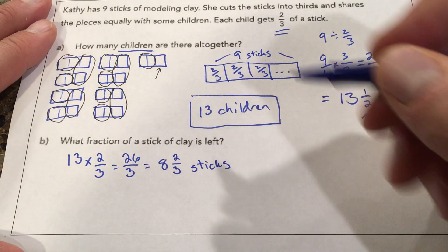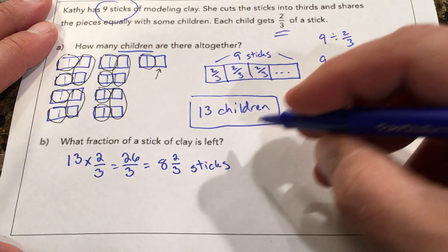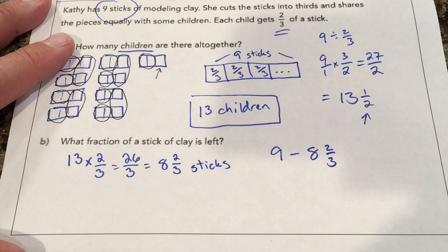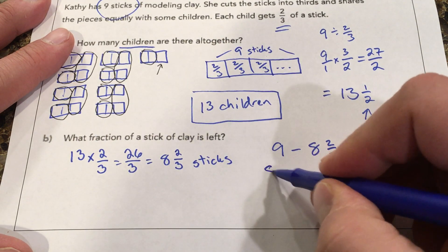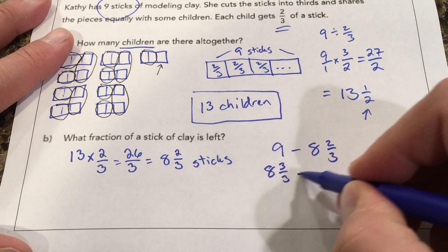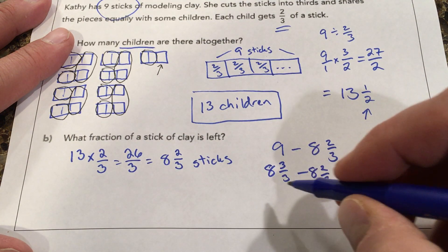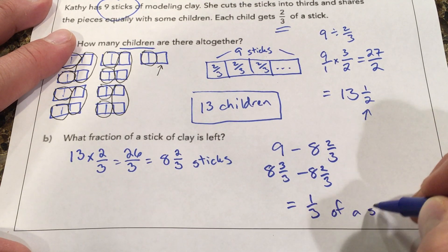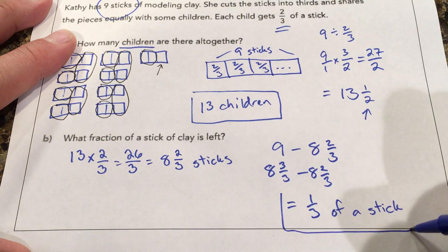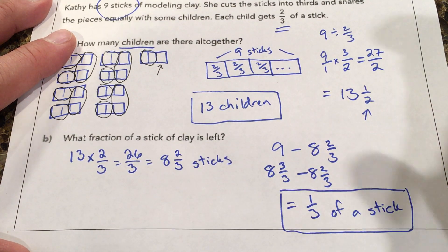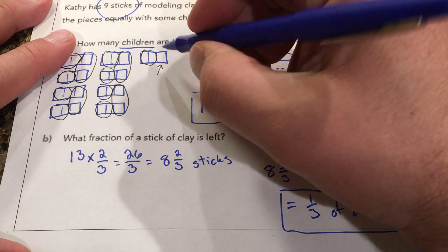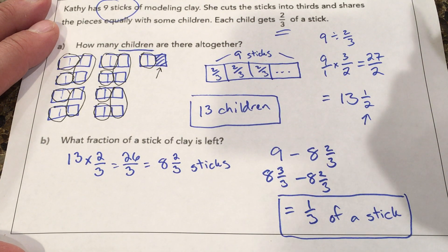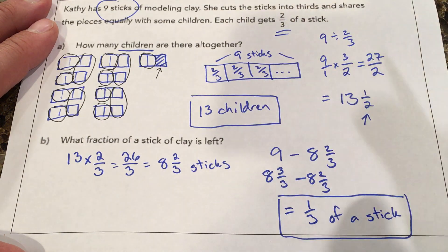She started with 9 sticks remember up here. So 9 minus 8 and two-thirds. We could think of 9 as 8 and three-thirds minus 8 and two-thirds. And the remaining amount is one-third of a stick. Which is what we saw up here. This one-third of a stick is what's left over after Kathy gave the clay to the 13 children.